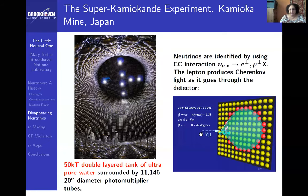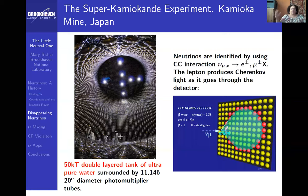A muon neutrino comes in, interacts, produces a muon. The muon travels faster than the speed of light in water, and light is emitted at a characteristic angle of about 42 degrees, producing a cone of light. That cone is detected by the photomultiplier tubes covering this tank of 50 kilotons of water — 30 meters high and 20 meters wide.